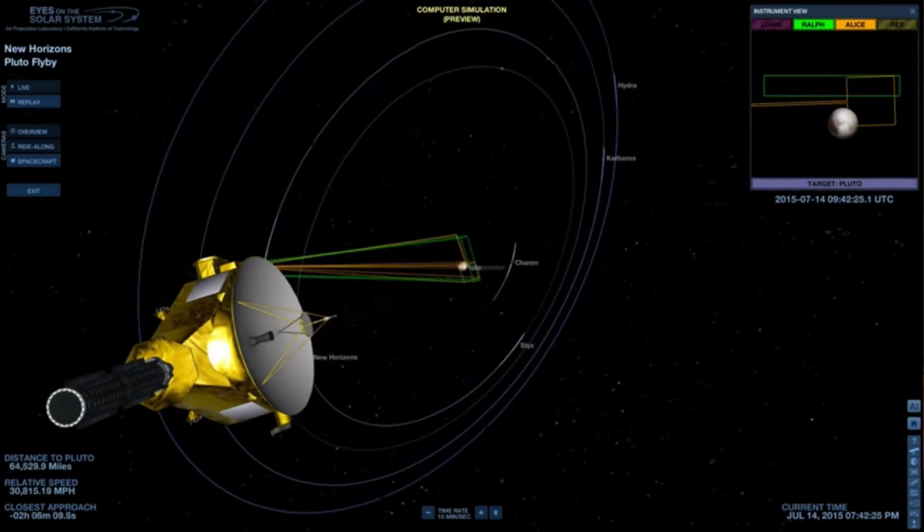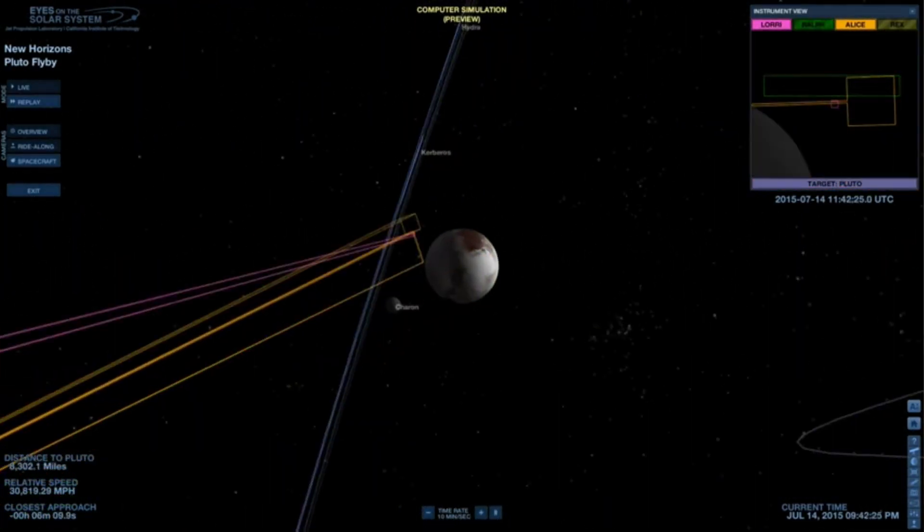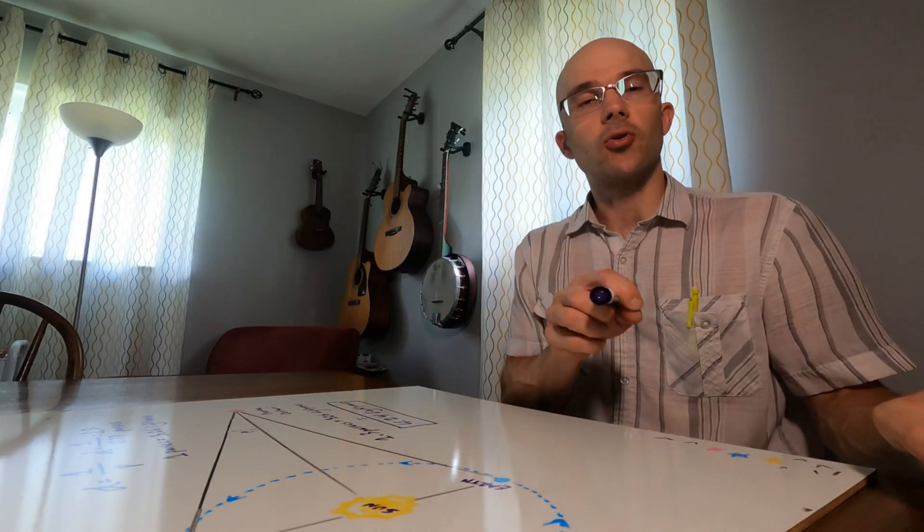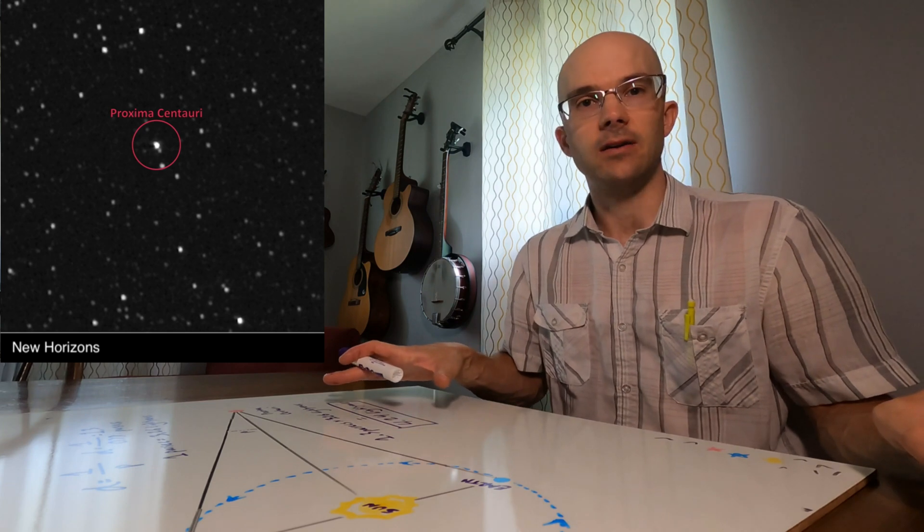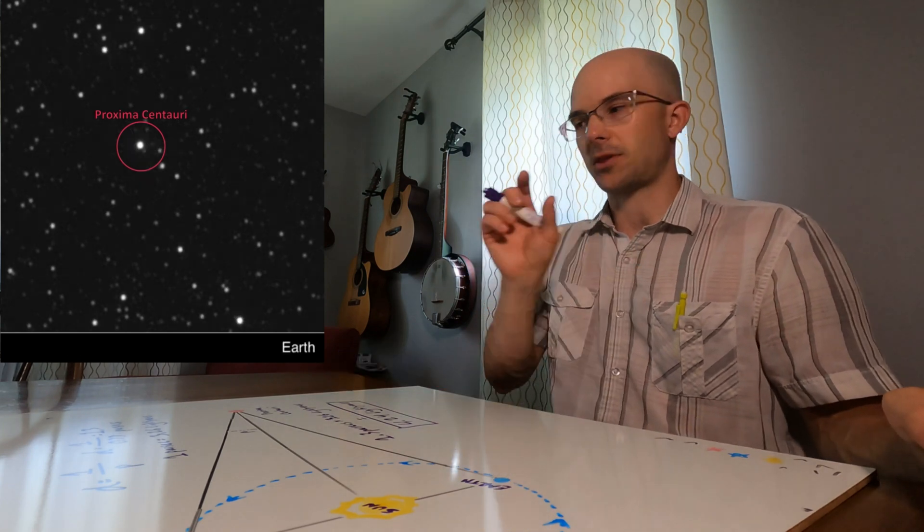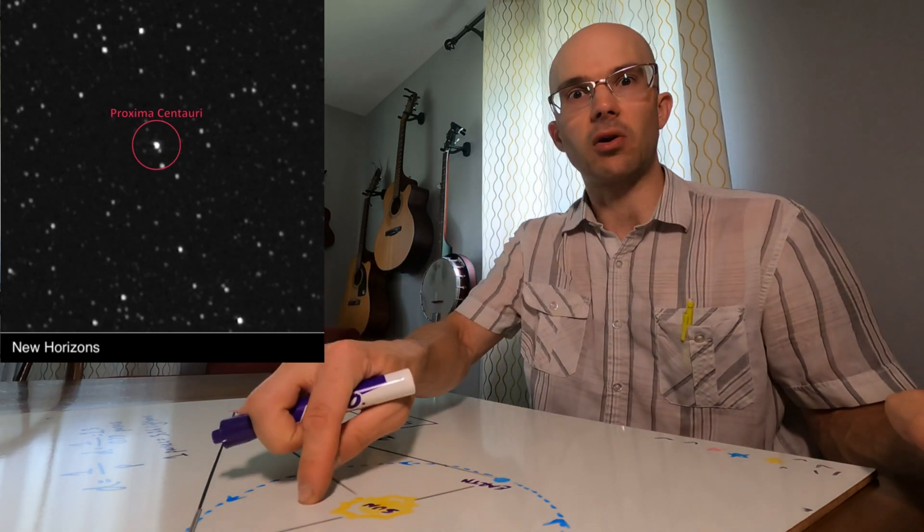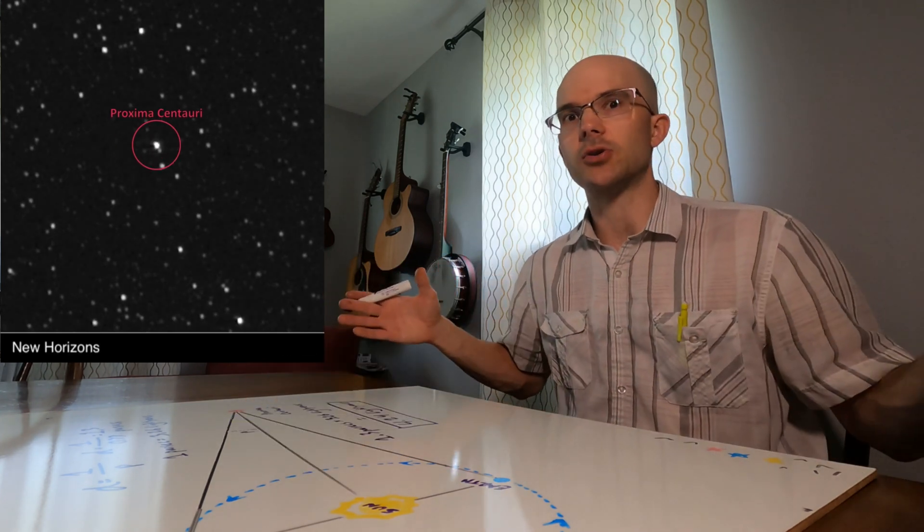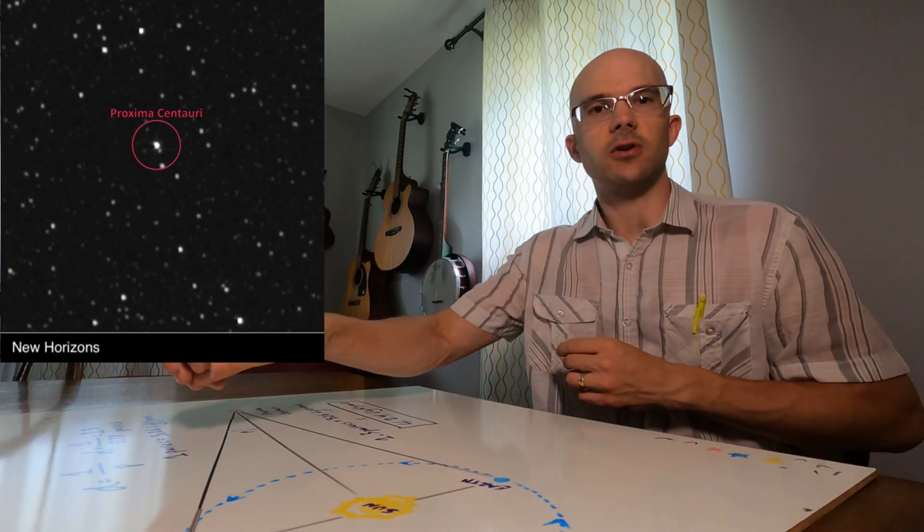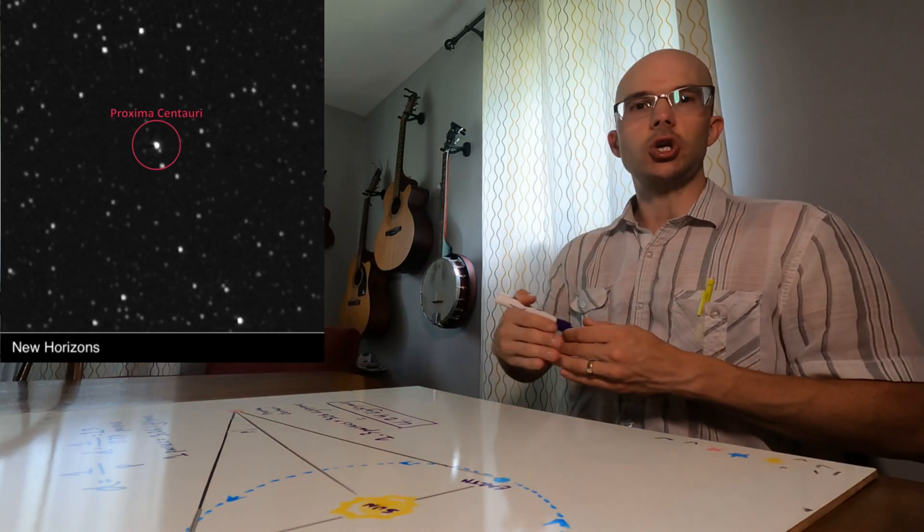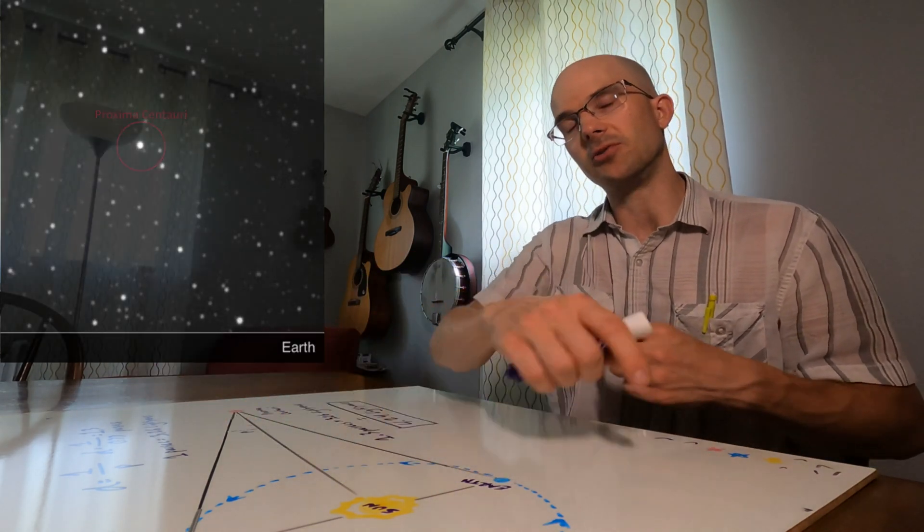New Horizons conducted a flyby of the Pluto system in 2015. In June 2020, the New Horizons spacecraft snapped this picture of Proxima Centauri. And astronomers were able to measure the parallax angle compared with the simultaneous measurement from Earth. This is a much larger parallax angle than we're able to measure from Earth, because the location of the New Horizons spacecraft represents such a huge change in viewing angle compared with Earth's annual revolutions around the Sun.